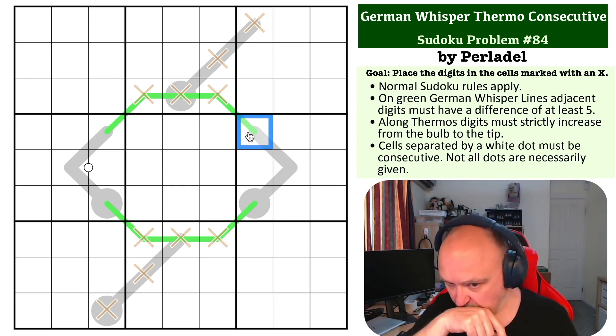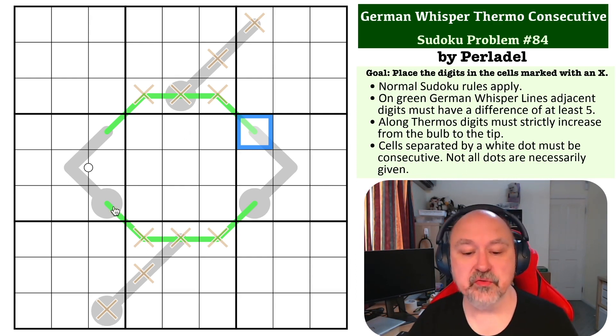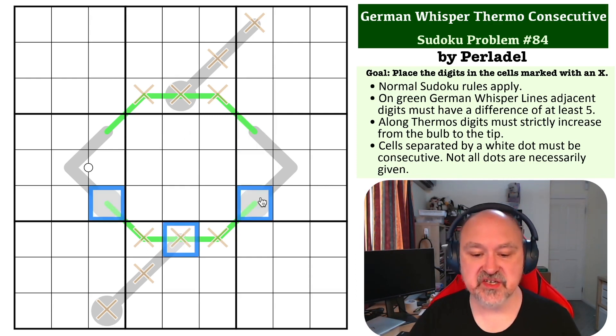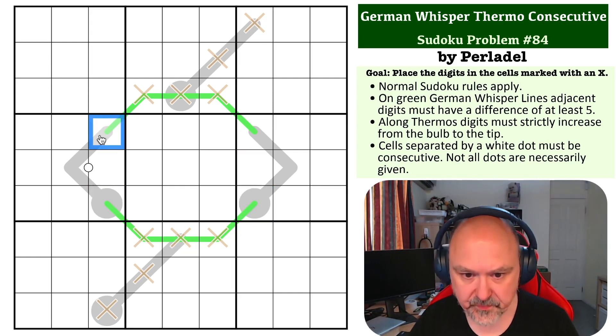You are always going to leapfrog the five and you'll end up with what's called alternating polarity. So you'll go low-high-low-high-low-high or high-low-high-low-high-low. Because of that, you will know that every second digit along the line will have the same high or low polarity.